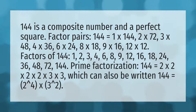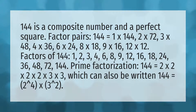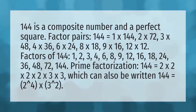144 is a composite number and a perfect square. Factor pairs: 144 equals 1 by 144, 2 by 72, 3 by 48, 4 by 36, 6 by 24.